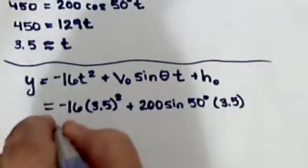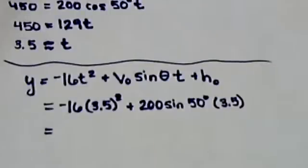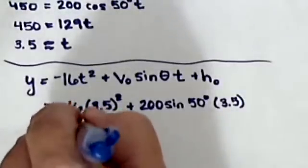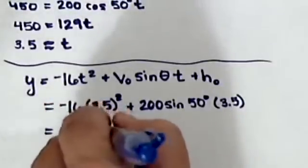So let's calculate this out. Let's see what we get. Negative 16 times 3.5 squared plus 200 sine 50 times 3.5. So this gives us 340 feet.